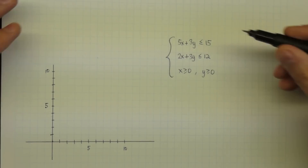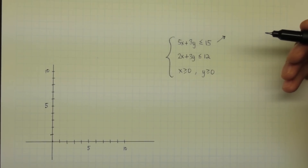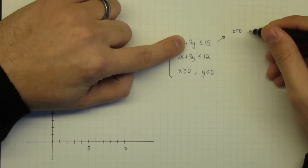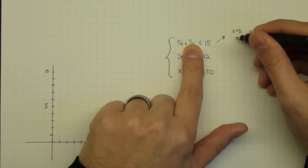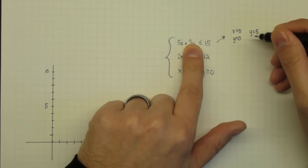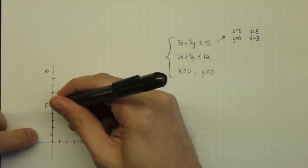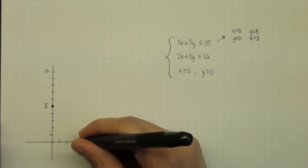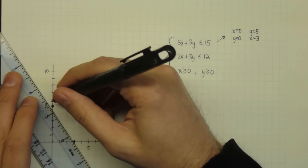We graph these as we graph all inequalities — we graph the straight line and then shade one side of the line. We plot two intercept points and draw the straight line. When x equals 0, y equals 5. When y equals 0, x equals 3. We plot those two points and draw the straight line between them.